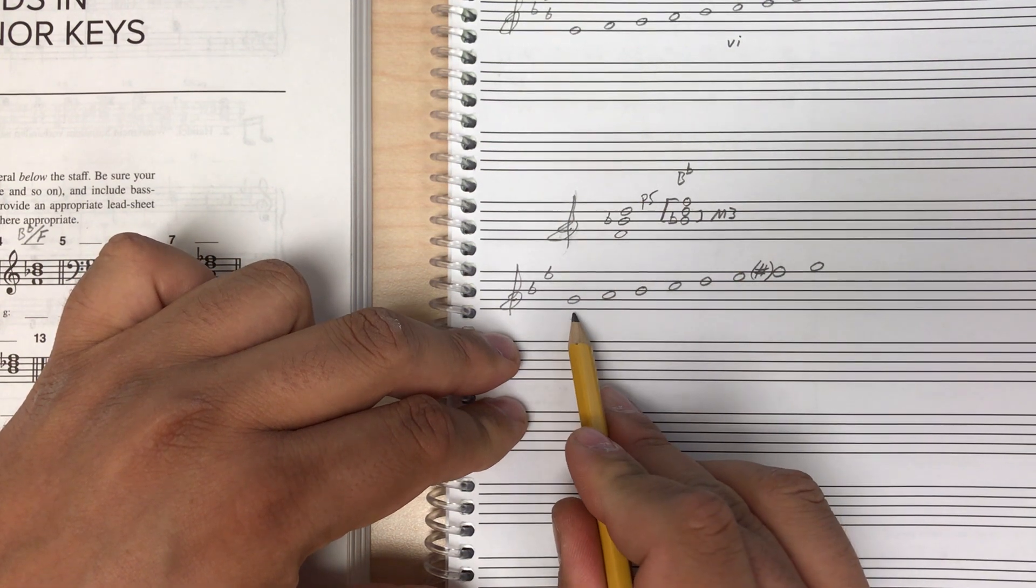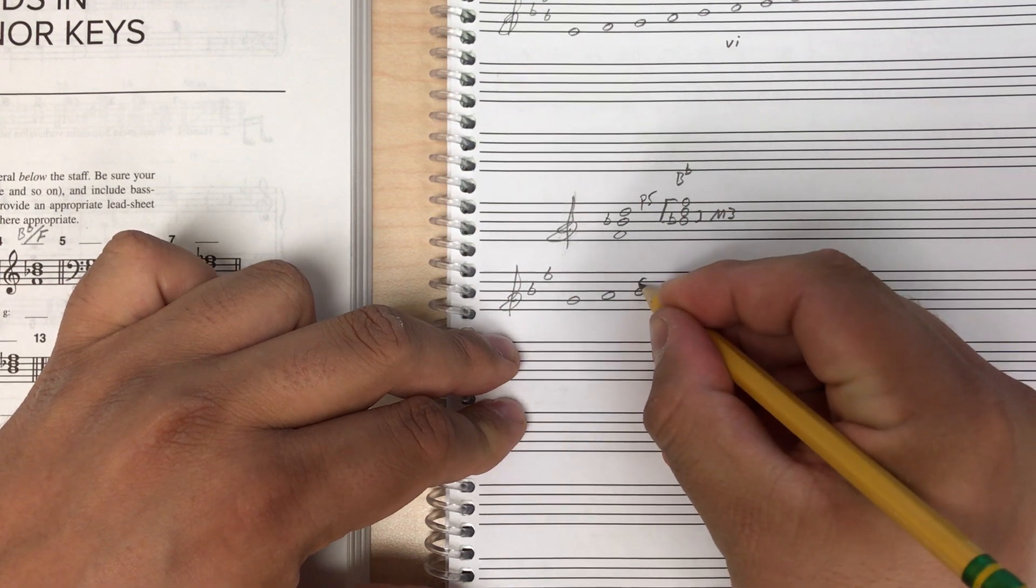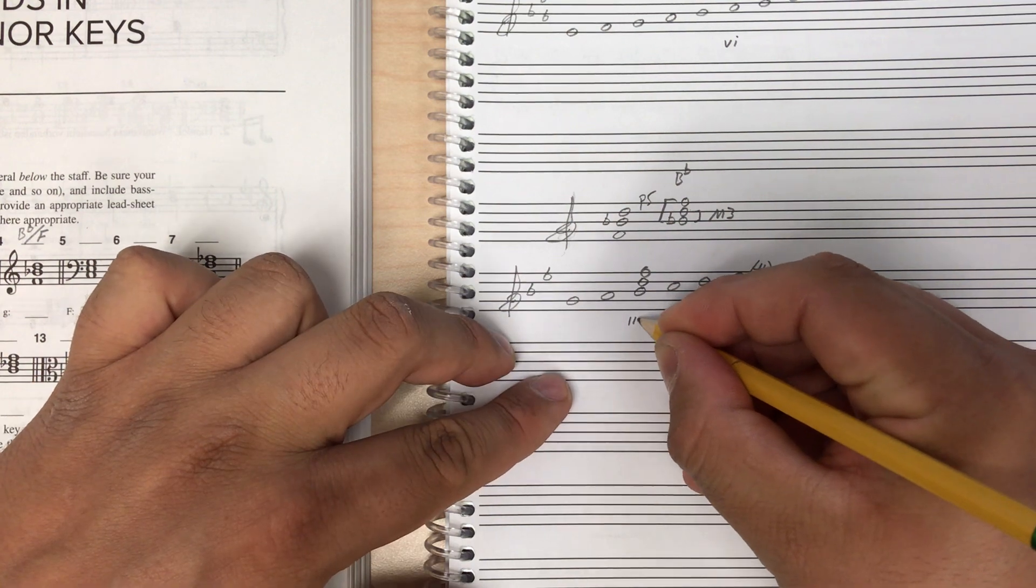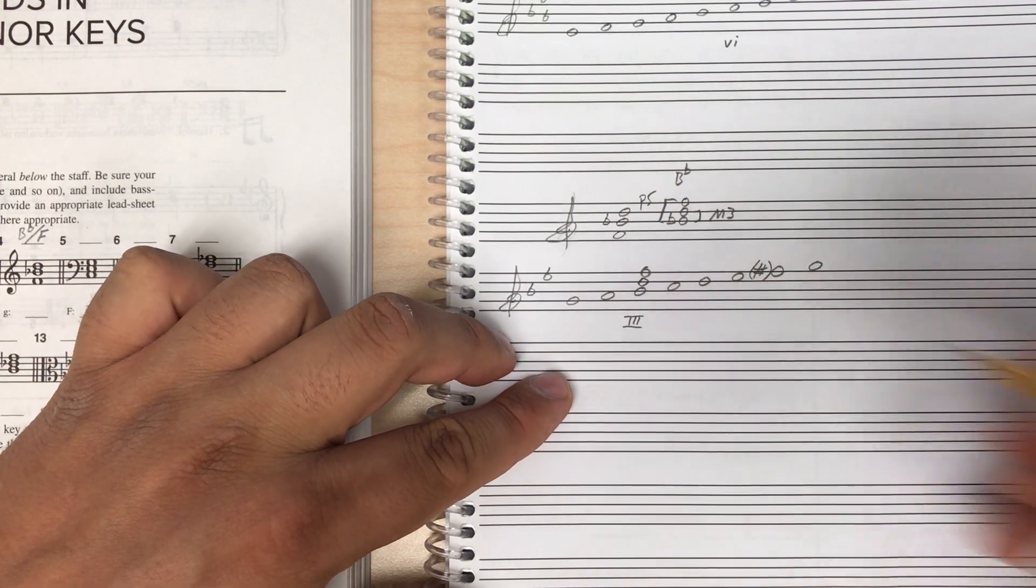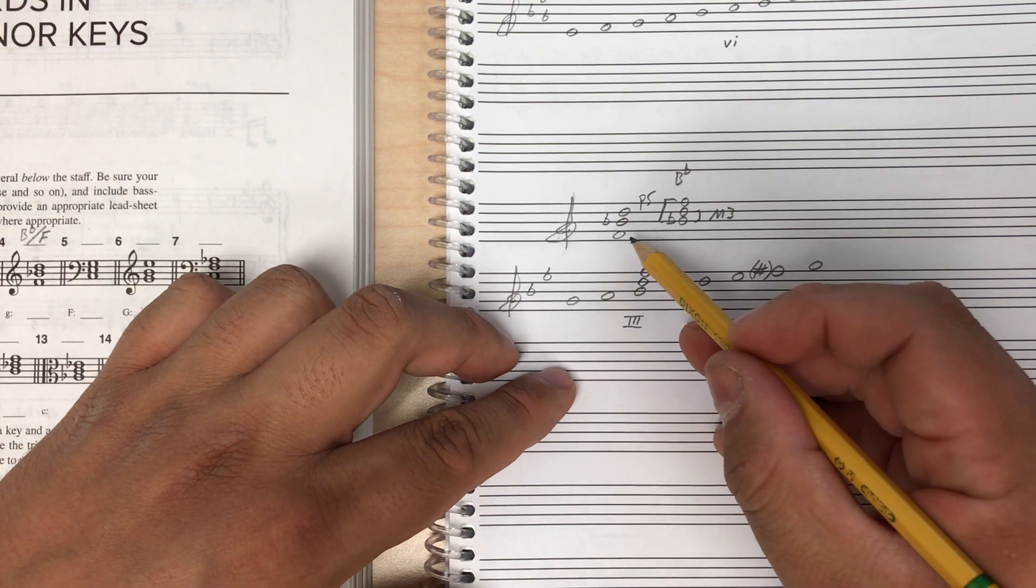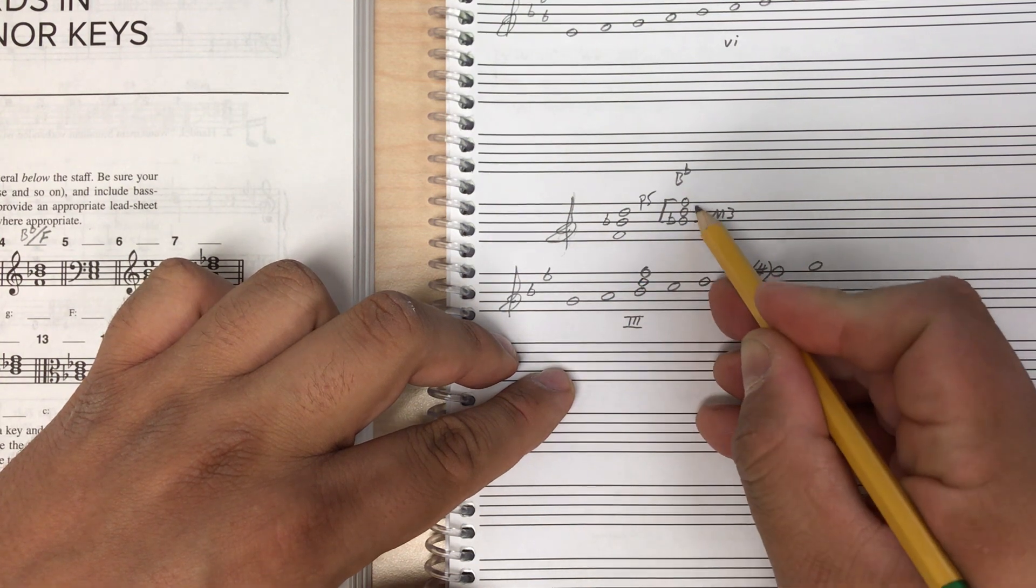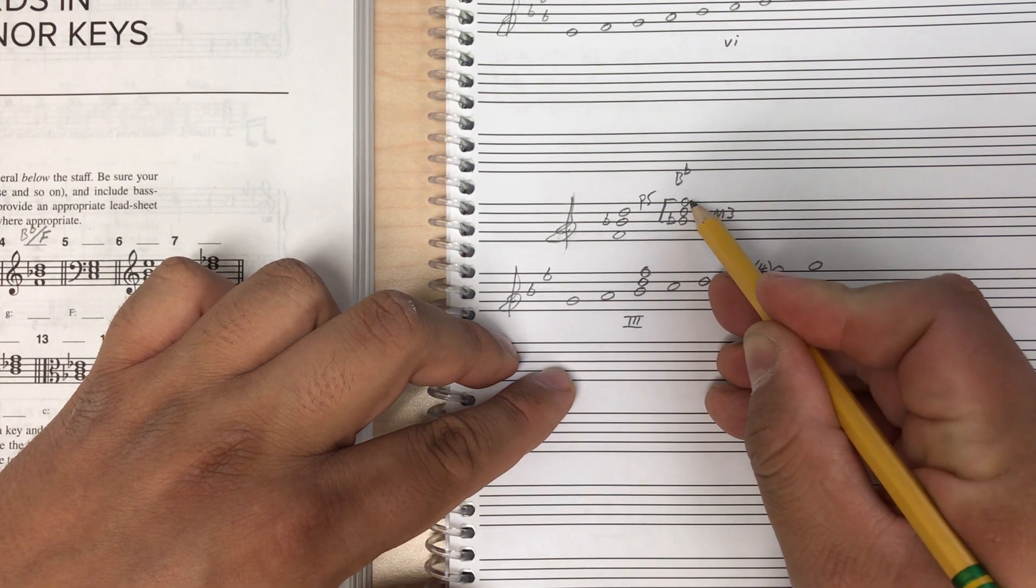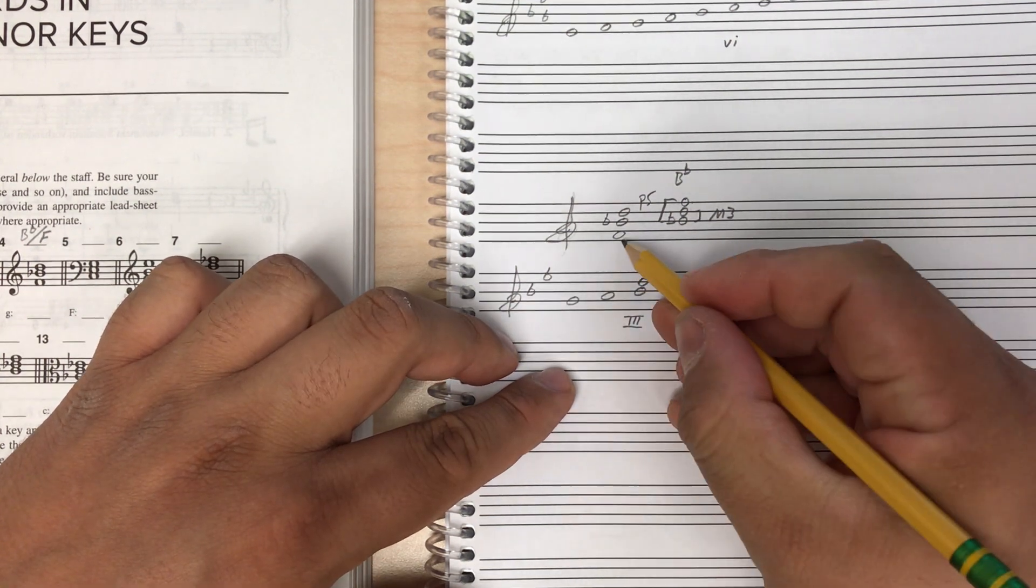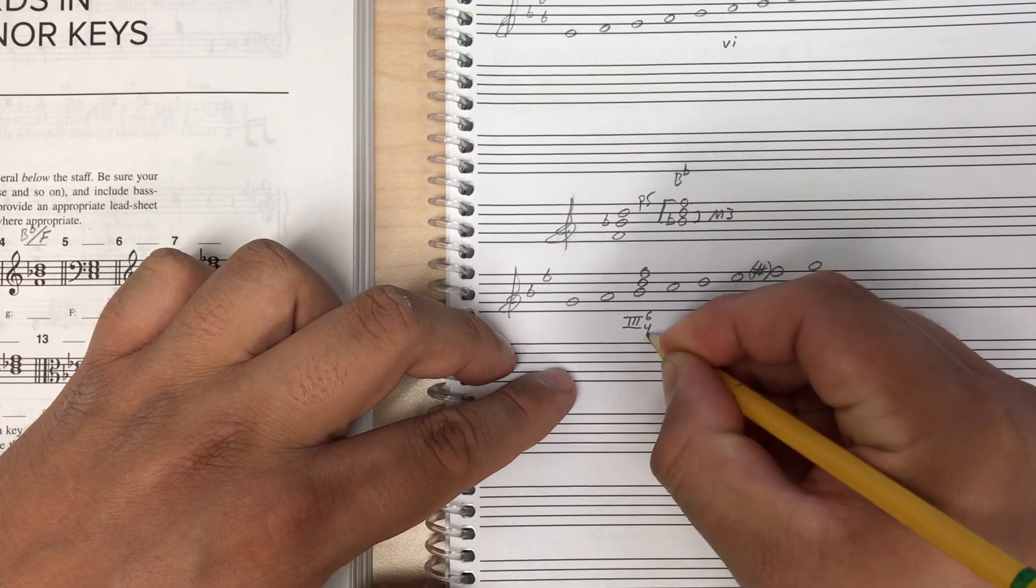So B flat in the key of G minor, G, A, B flat, B flat is the three chord. It's a major chord, so I'll use uppercase three. And then I need to think about what the base position symbol should be. So F was our base note. And looking at how we stack the chord up, we can see that F is the fifth of the chord. So the base position symbol for when the fifth of the chord is in the base is six, four.